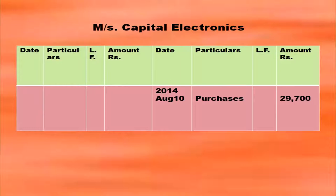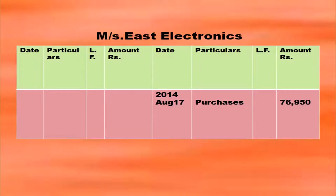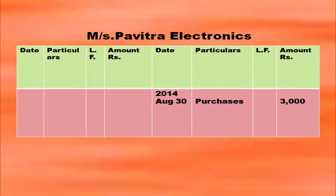Then Messrs. Capital Electronics — from them also Harsha Electronics purchased goods. So on the credit side you will post by purchases rupees 29,700. Then East Electronics — from them also Harsha Electronics purchased materials. So on the credit side of Messrs. East Electronics account you will post by purchases with amount and date. Always purchases will have debit. For Pavitra Electronics their account will be opened and on the credit side you will write by purchases with date and amount.